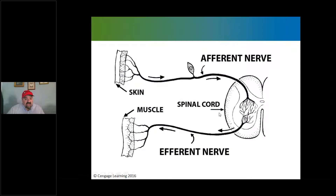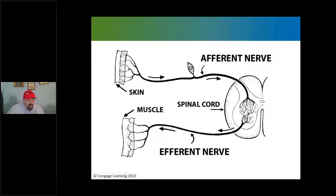Afferent information — sensory information — comes to the central nervous system, specifically the spinal cord. Efferent information goes to the skeletal muscle, causing muscle contraction. Processing and decision-making takes place in the spinal cord itself, deciding what kind of output needs to respond to the input.